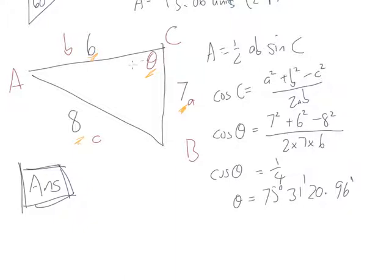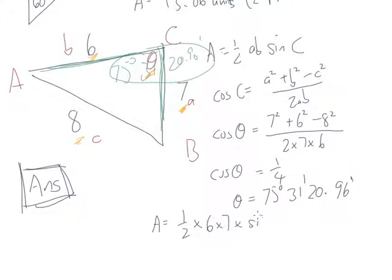Anyway, that now tells me that angle here is 75 degrees, 31 minutes, and 20.96 there. So I've now got myself in a situation where I've got a side, I've got a side, I've got the angle between, two sides and the angle between, I'm good to go for my area formula. A is half by 7 by 6 by sine that angle, so 75 degrees, 31 minutes, 20.96 seconds. So again, our area formula, multiply the two sides by sine angle between, half AB sine C, our good friend.